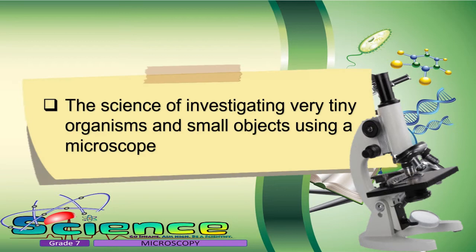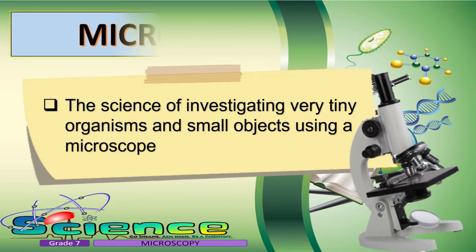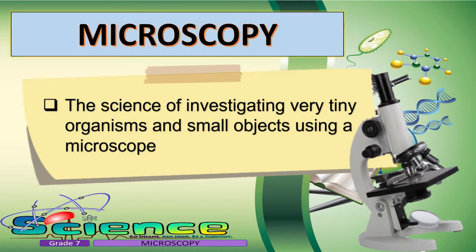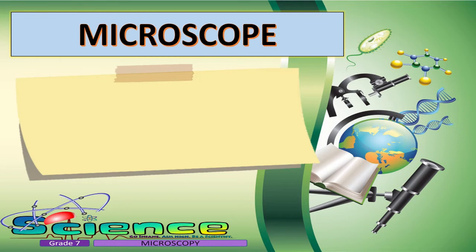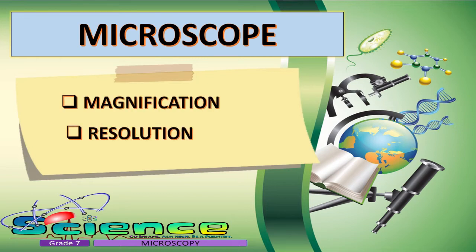The science of investigating very tiny organisms and small objects using a microscope is called microscopy. To understand how a microscope works, we need to be familiar with two terminologies: magnification and resolution.